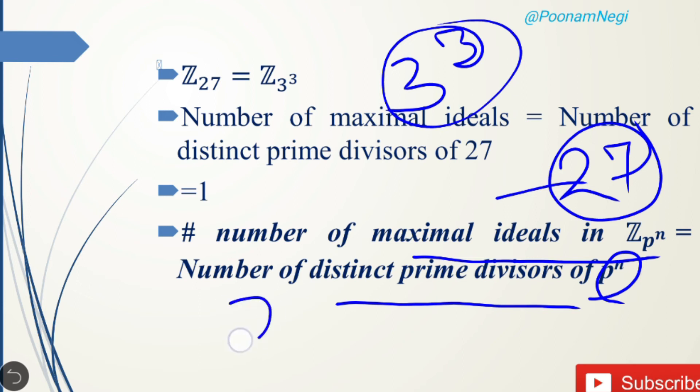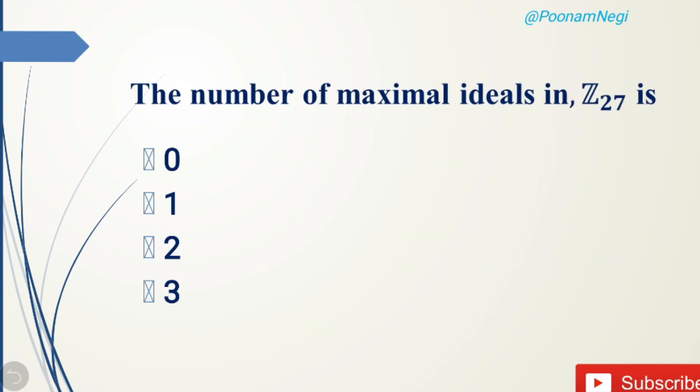that 27 can be written as 3 × 3 × 3, which means the number of distinct prime factors is 1. So the correct answer for this question is option 1. The number of maximal ideals in Z_27 equals 1.